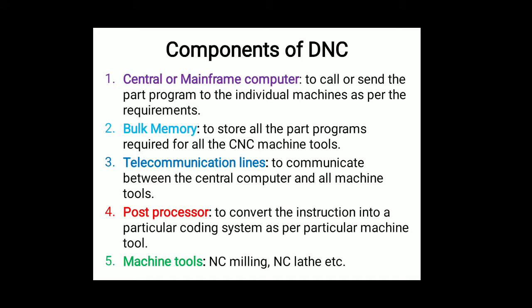The first component is the center or mainframe computer. Using this mainframe or center computer we are going to give instructions and send the part program to the required machines only — to send the part program to individual machines as per the requirements. The second component is bulk memory, used to store all the part programs required for all CNC machine tools. We store the part program in the bulk memory section and circulate it to whichever machine requires it.